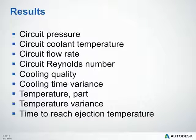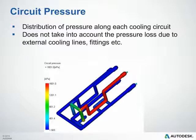Now we'll take a closer look at cooling analysis results. The circuit pressure result shows the distribution of pressure along each cooling circuit. It can help ensure you're within your factory's capacity and identify possible flow restrictions within your circuits. Keep in mind that this does not account for pressure loss due to external cooling lines running to your thermolator or any fittings connecting those exterior lines to your tool — so give yourself some room.